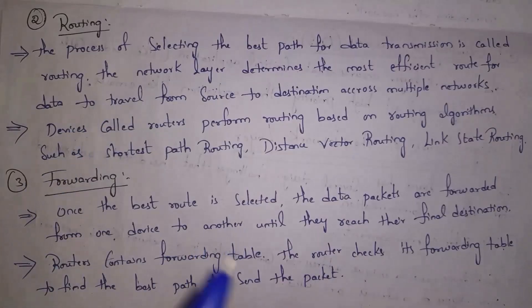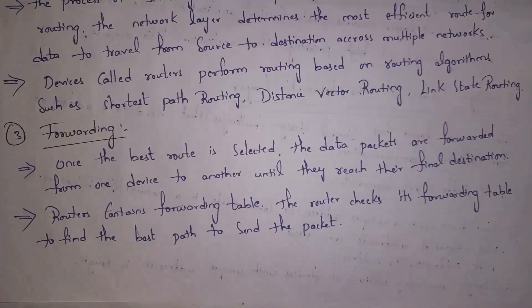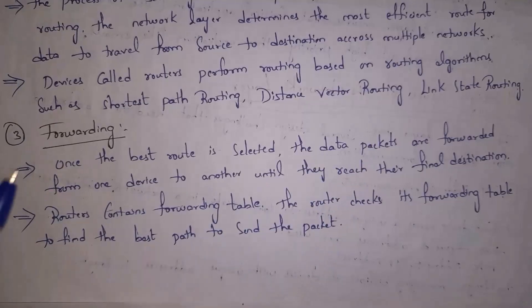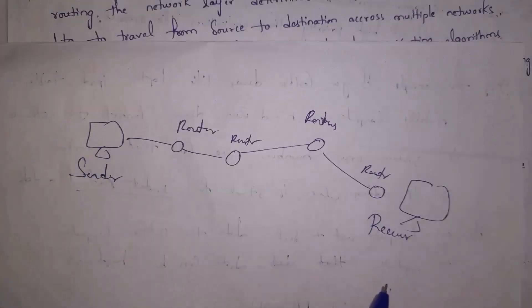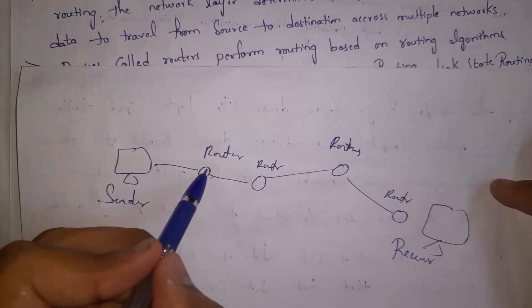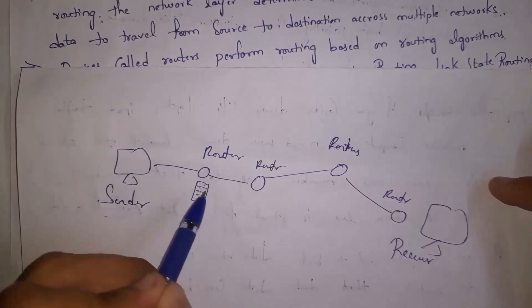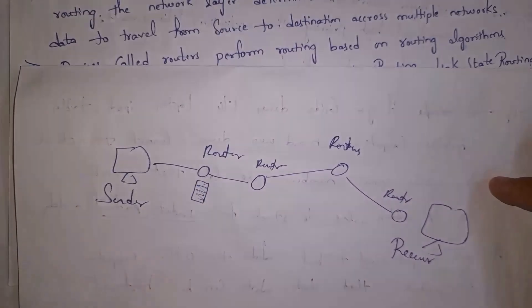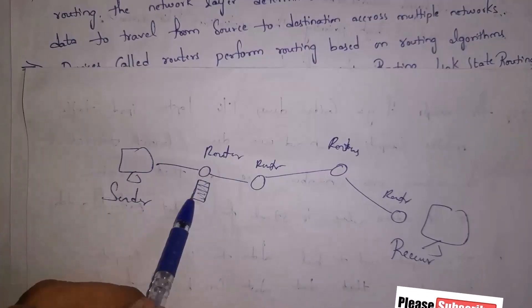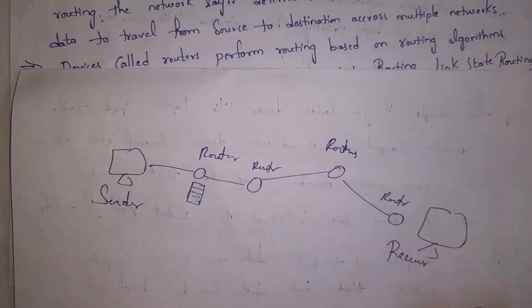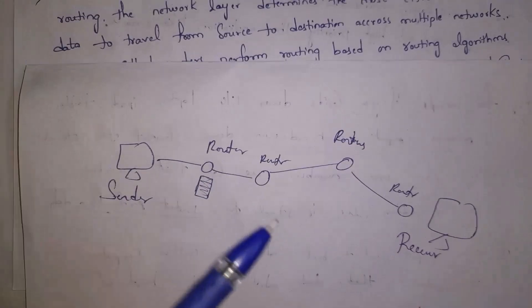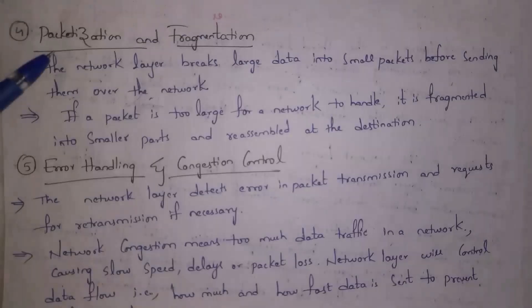The third function is forwarding. Once the best route is selected, data packets are forwarded from one device to another until they reach the final destination. The device used is a router — data will be transferred through various routers until data successfully reaches the receiver. Each router contains a routing table in which information about all other routers is stored, so the router finds the best route by looking at the table. Forwarding means transferring data from one router to another until data successfully reaches the receiver.